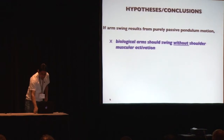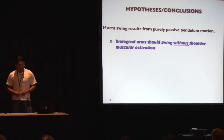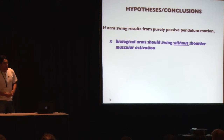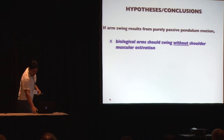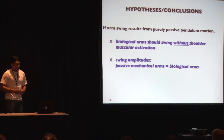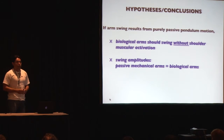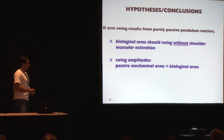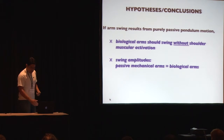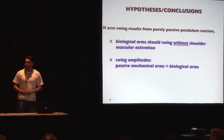In conclusion, we find that biological arms do indeed swing with shoulder muscular activation. Our anthropomorphic passive mechanical arms swung with lesser amplitudes than biological arms. However, we do find some passive dynamics within the system, especially in the forward direction. That concludes my talk — I'd be happy to take any questions.